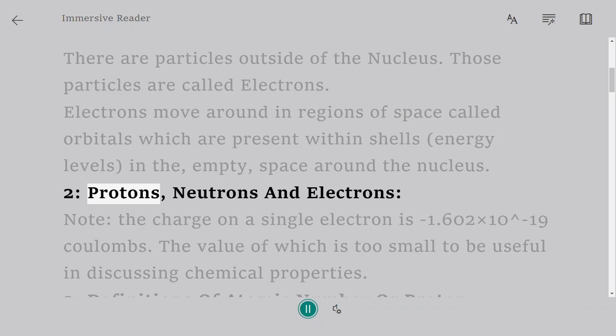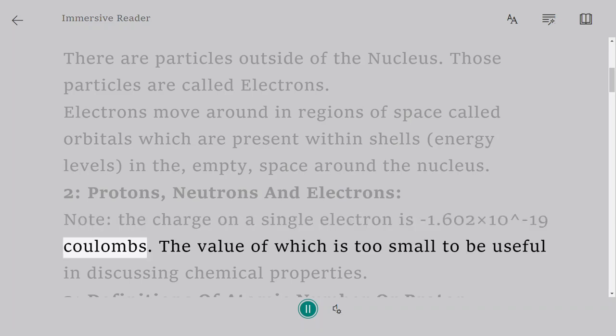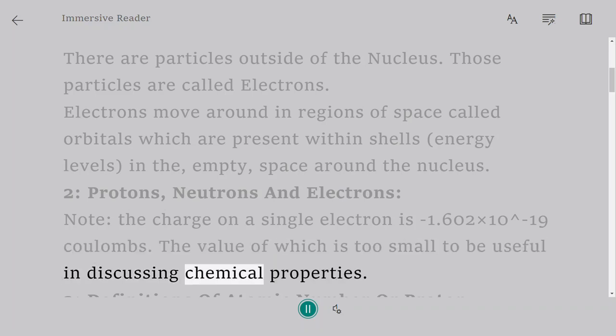2. Protons, Neutrons and Electrons. Note, the charge on a single electron is -1.602×10^-19 coulombs. The value of which is too small to be useful in discussing chemical properties.